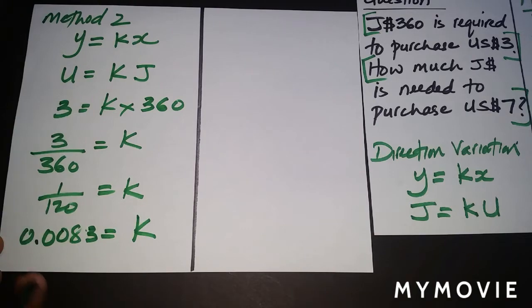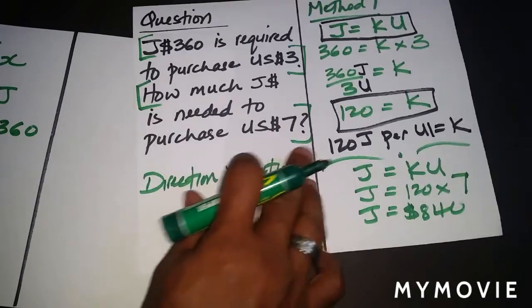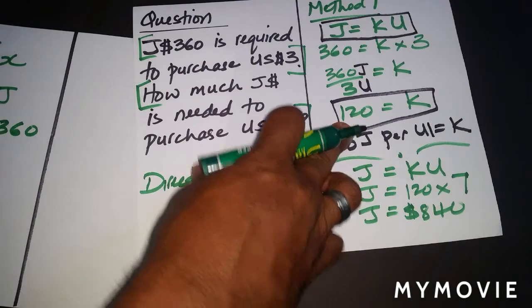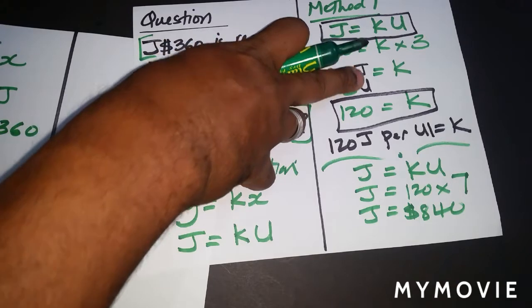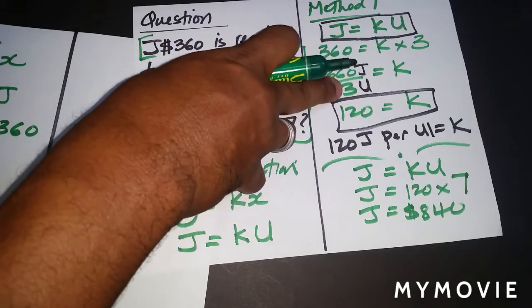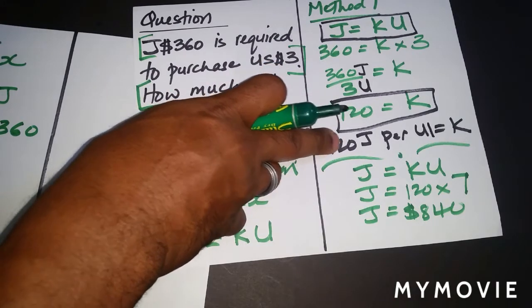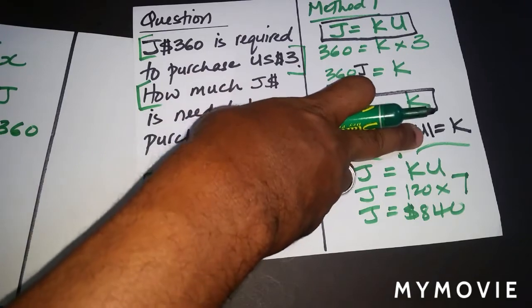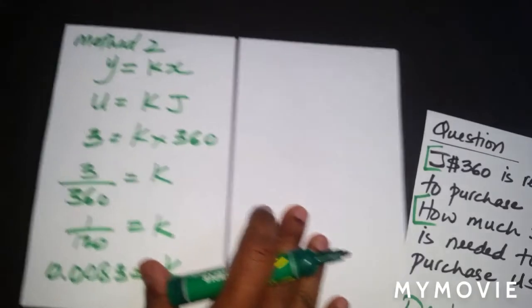So in this particular method, when we put U first and J second, this is the value of K: 0.0083. Notice in Method 1, when we put J first and U second, the value of K is 120. Why? Because when we work it out this way, the 360 was for Jamaica and the 3 goes for U. So whenever we have it like this, then the value that we got for K, which is 120, the interpretation was 120 Jamaican per one US dollar, or 120 Jamaican purchases one US dollar.